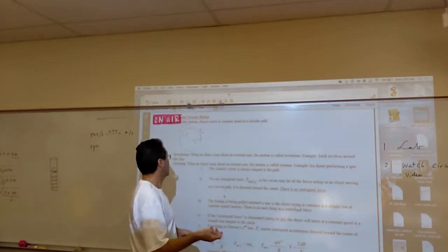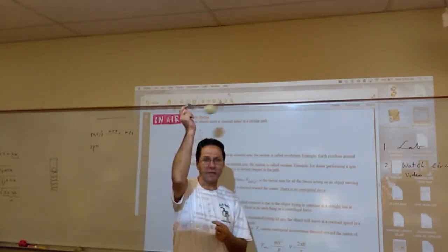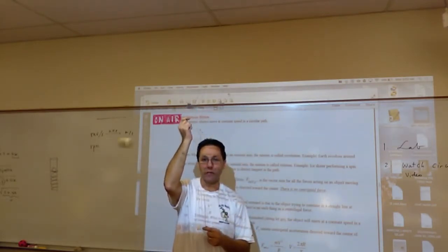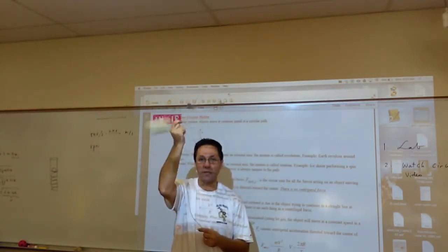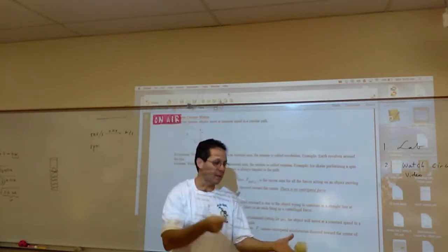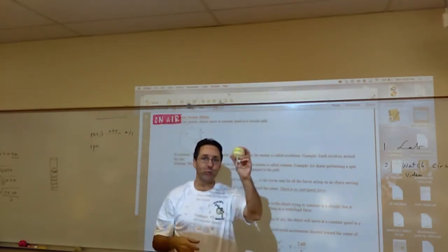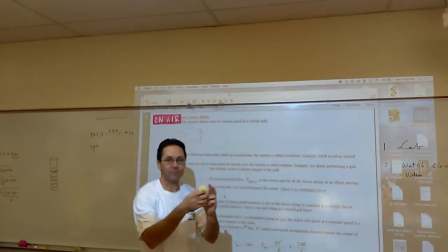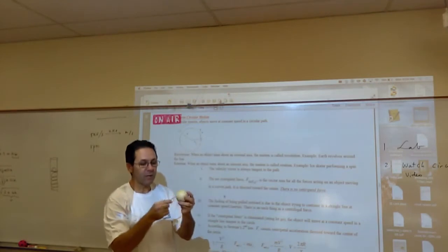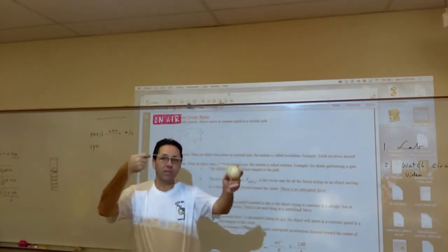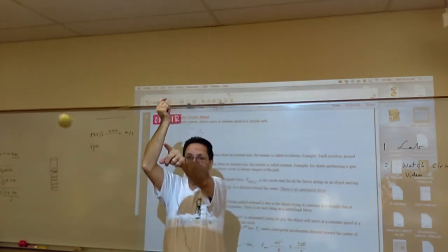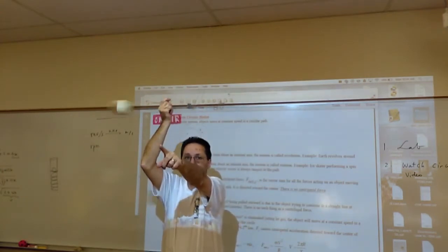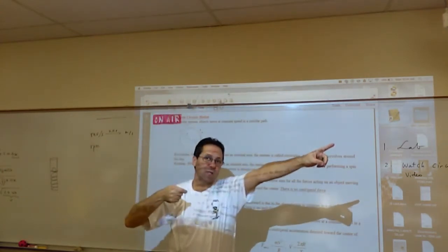A simple example is if you take a tennis ball and attach it to a string, and it's just whirling over your head. If you can maintain a constant speed, that's circular motion. Now, what's forcing this ball to stay in a circle? It's basically the string. If it wasn't for the string, if I let the ball go, it would just go flying towards that wall.